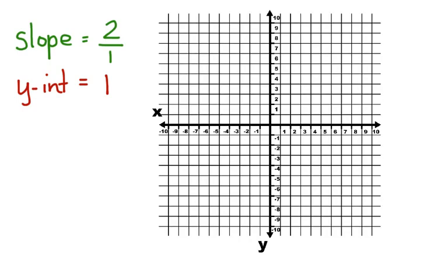Let's start by graphing the y-intercept. Now we can graph the slope. We go up 2 and over 1. Now we can draw our line. Here is the graph of the function f(x) equals 2x plus 1.